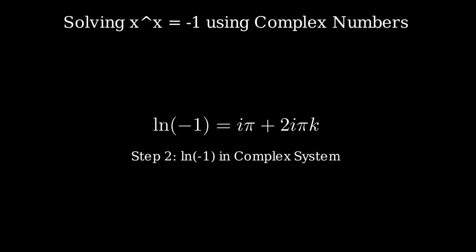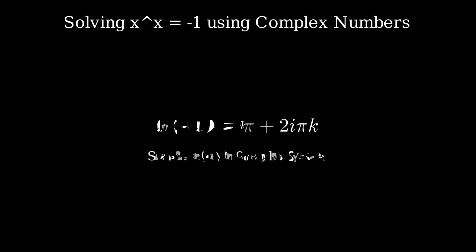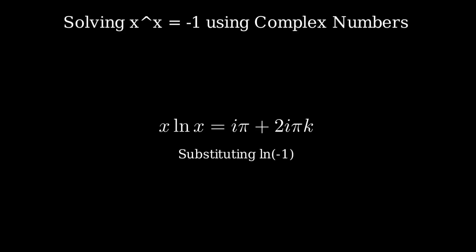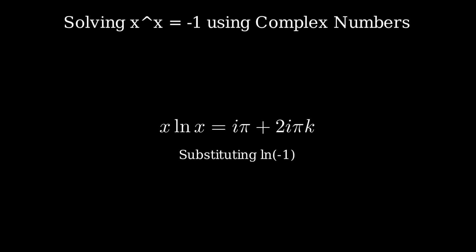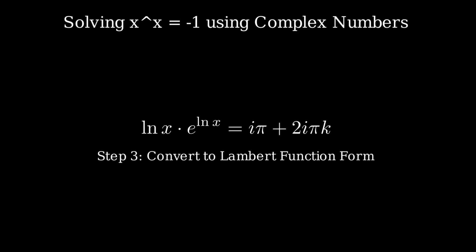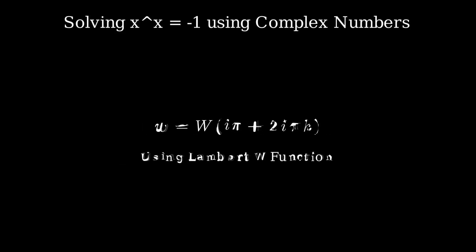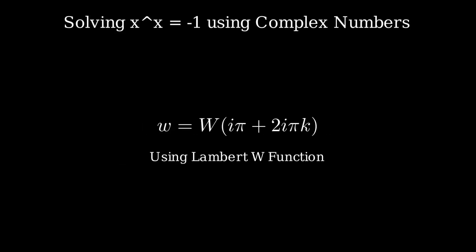the natural logarithm of negative 1 is not just a single number. It's actually equal to i times pi plus 2 times i times pi times k, where k is any whole number. Substituting this into our equation, we get x times the natural logarithm of x equals i times pi plus 2 times i times pi times k. To solve for x, we rewrite the equation in a form that matches the Lambert W function, giving us natural logarithm of x times e raised to the natural logarithm of x equals i times pi plus 2 times i times pi times k. Applying the Lambert W function, natural logarithm of x equals W of i times pi plus 2 times i times pi times k.